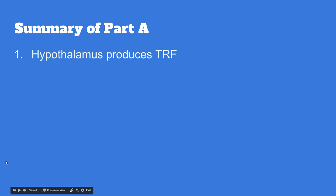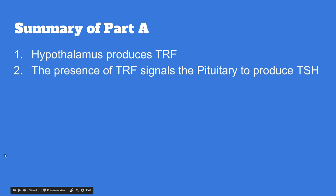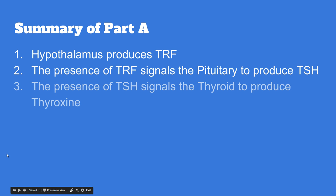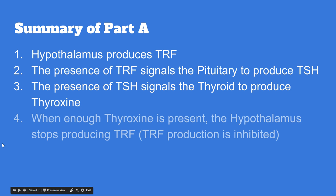So the summary in here, again, the hypothalamus produces TRF. The presence of TRF signals the pituitary gland to produce TSH, the second hormone. The presence of TSH produced by the pituitary signals the thyroid to produce thyroxine. That then tells all the cells in your body what to do, whether to increase production, slow production, or maintain. And then lastly, when enough thyroxine is present, the hypothalamus stops producing the TRF because the production is inhibited. It's prevented. Come back to this if you need it along the way.